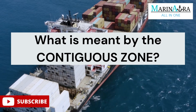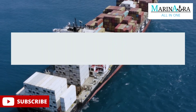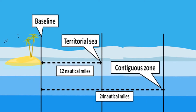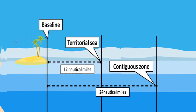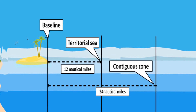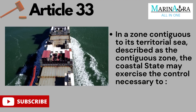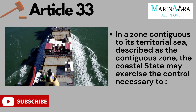Next, what is meant by the contiguous zone? The contiguous zone is a band of water extending farther from the outer edge of the territorial sea to up to 24 nautical miles from the baseline, within which a state can use limited control for the purpose of preventing or punishing infringement of its customs, fiscal, immigration, or sanitary laws and regulations within its territory or territorial sea. It is explained in UNCLOS under Article 33 as follows.